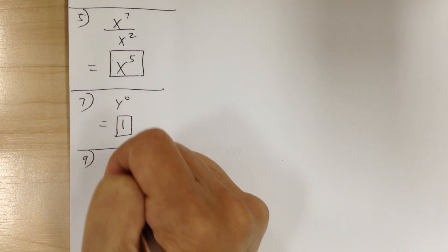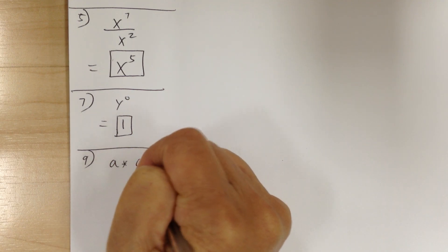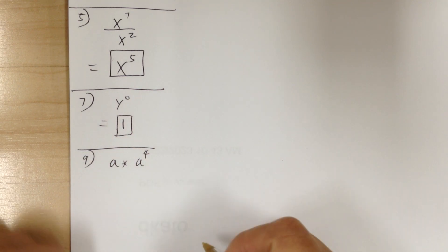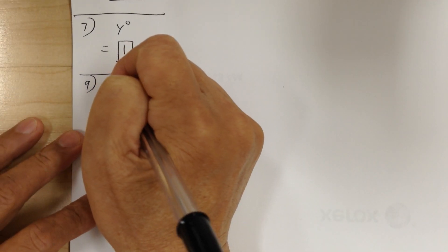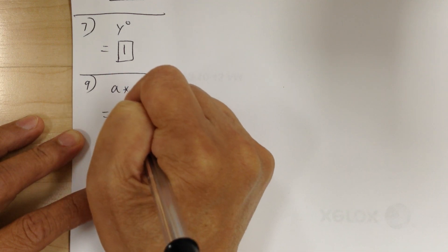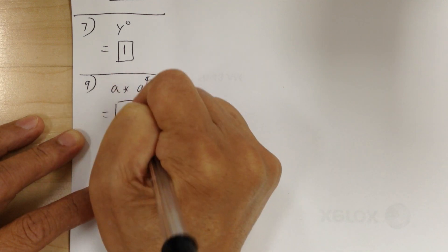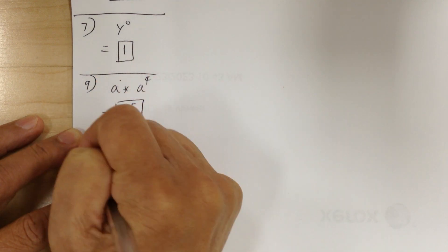Number 9, you have a times a to the 4. When you don't see a number, it means it's 1. So this will equal a to the 5 power, because 1 plus 4 gives you 5.